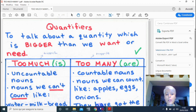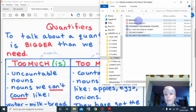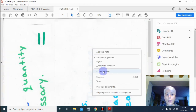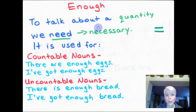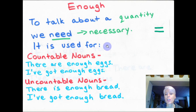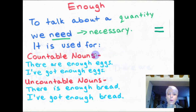We have seen what we use to say if we have more than what we need. But if we have the right quantity of what we need, we use the word 'enough'. With 'enough', I do not have to decide if my word is countable or uncountable, because I use it with both.